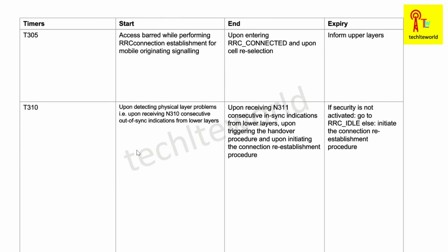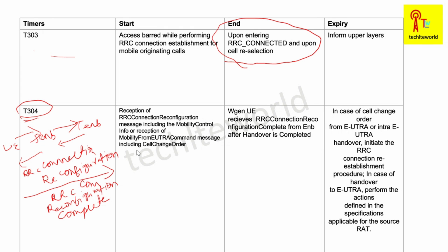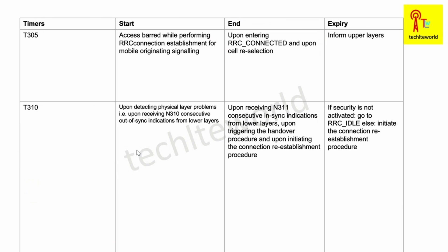T305 starts upon access barring while performing RRC Connection Establishment for mobile originating signaling. This is different from T303, which starts for mobile originating calls — T305 is for mobile originating signaling. It ends when the RRC connected state is entered or upon cell reselection, and upon expiry it informs the upper layer.